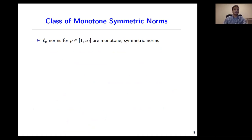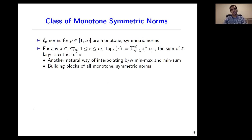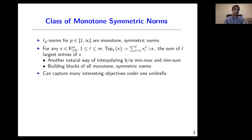Let me make a few arguments in favor of working with monotone symmetric norms. First of all, all Lp norms are monotone symmetric norms. There's another class of special norms called top-L norms, which are building blocks of all monotone symmetric norms. The top-L norm of a vector is the sum of its L largest entries. Top-L norms give another natural way of interpolating between the min-max and min-sum objectives, so monotone symmetric norms can capture many interesting objectives under one umbrella.